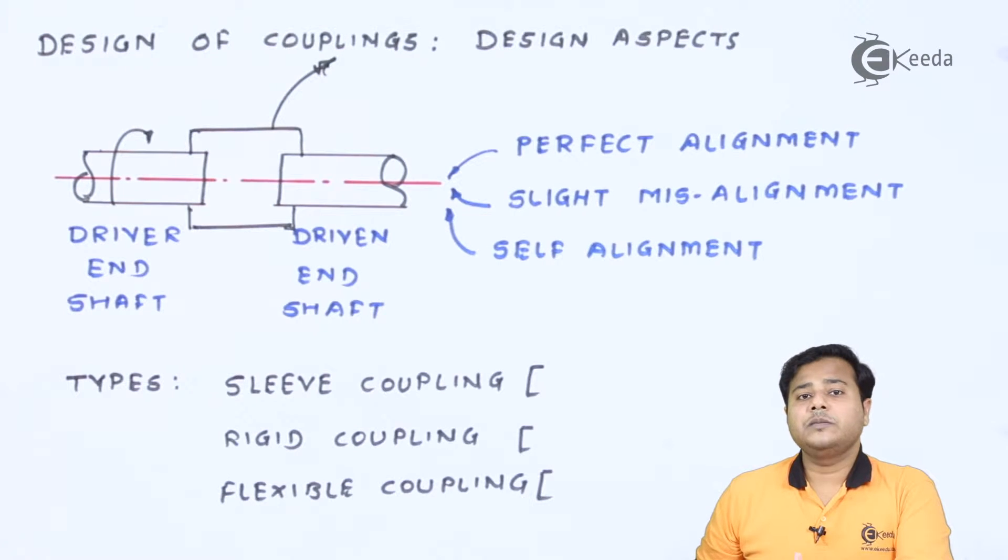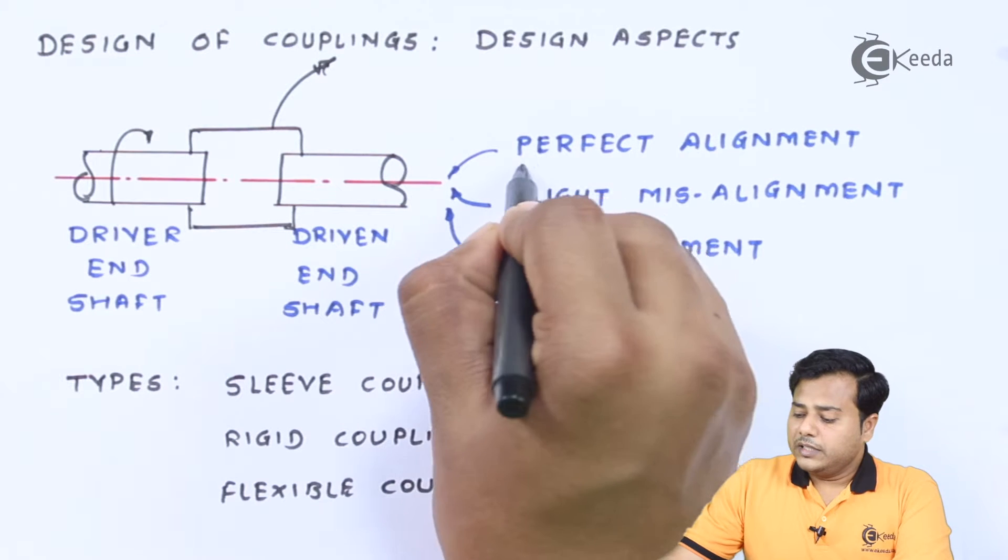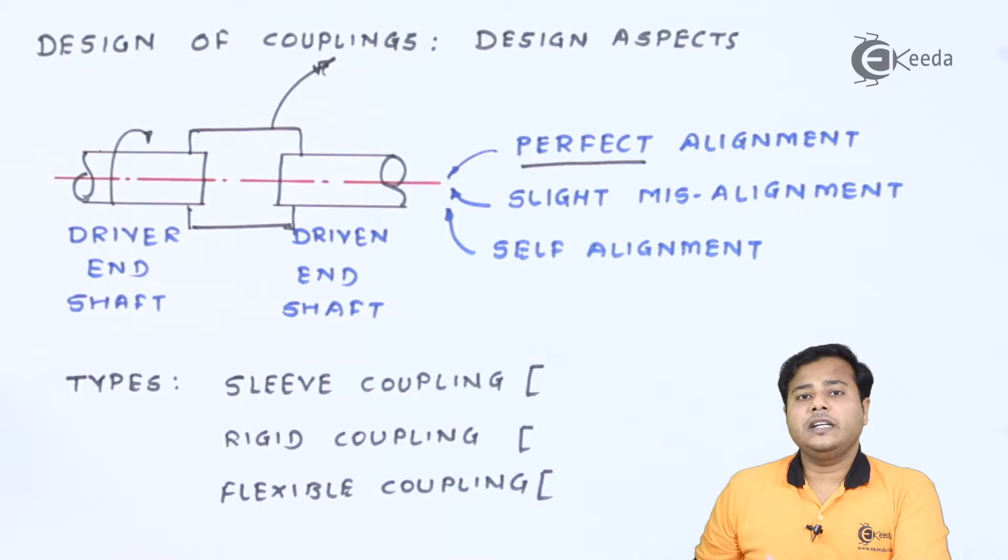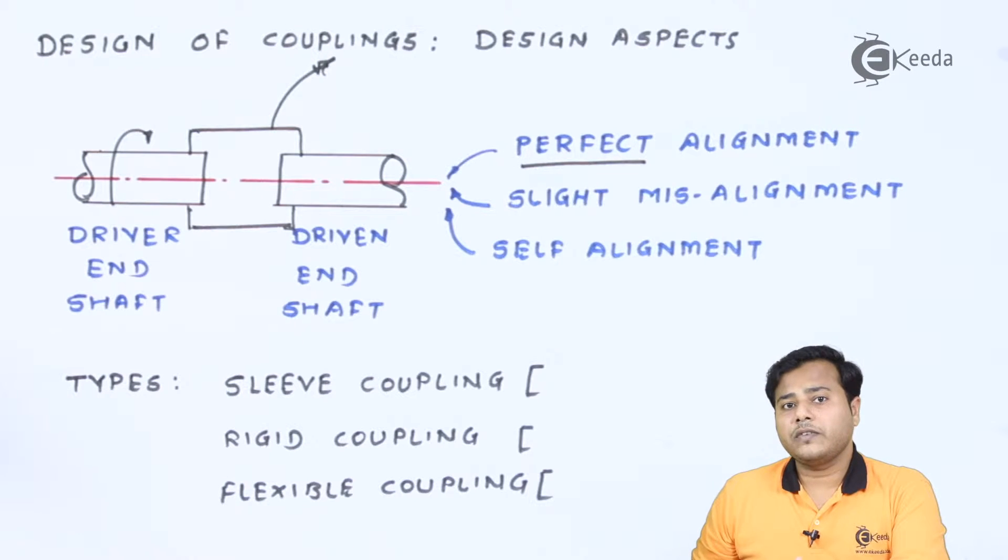Let us say this is the means which we have used for connecting them. Such means is nothing but couplings. Now there comes different various types of couplings depending upon the location of the shaft, depending upon the length of the shaft, depending upon the alignment of the shaft or misalignment of the shaft. Now let us look at how different they are. Now there is one possibility that it is perfectly aligned. In that case, we will use different kind of couplings.